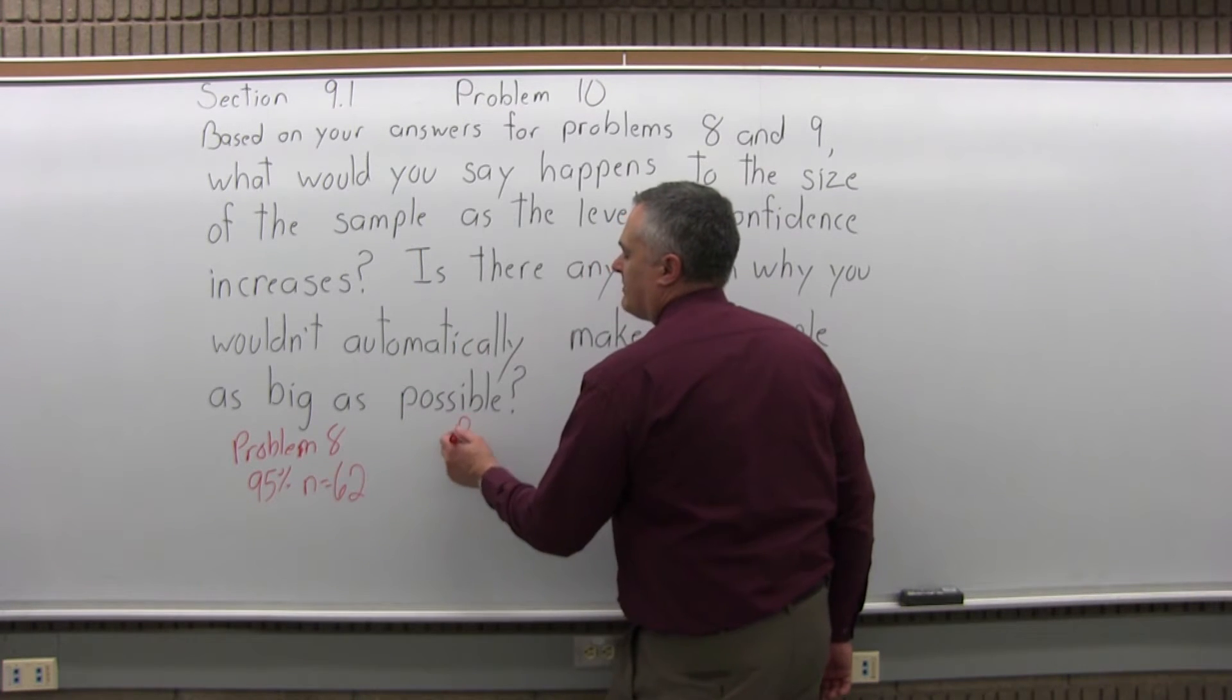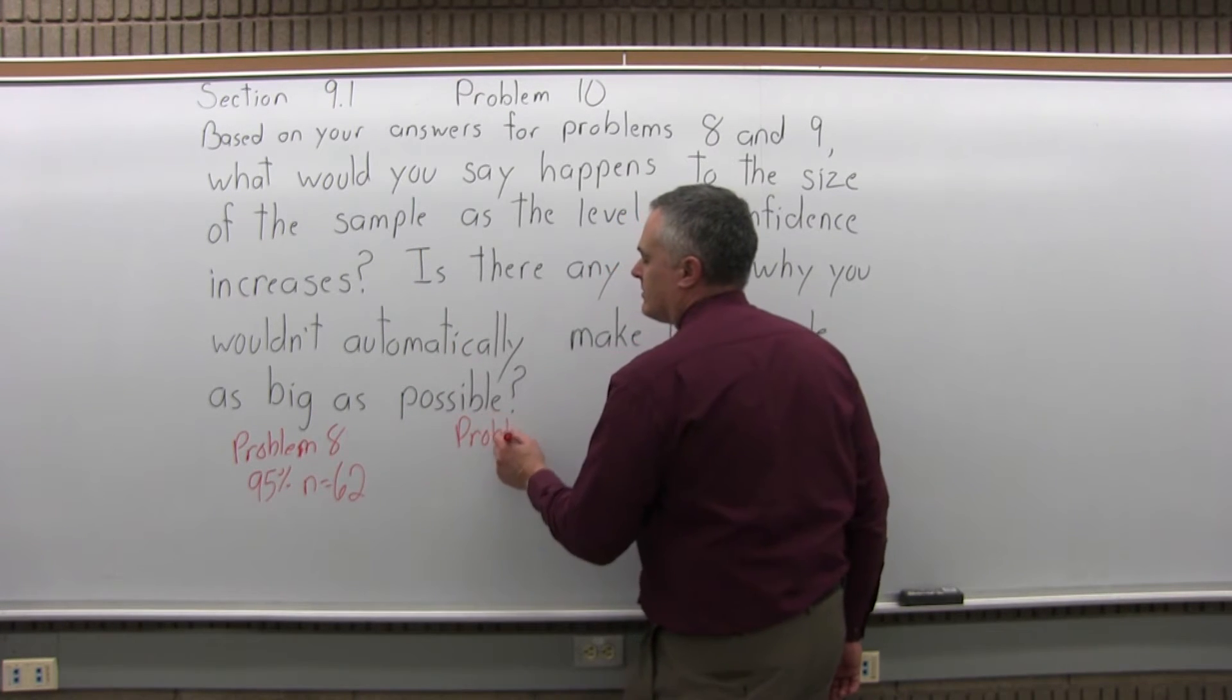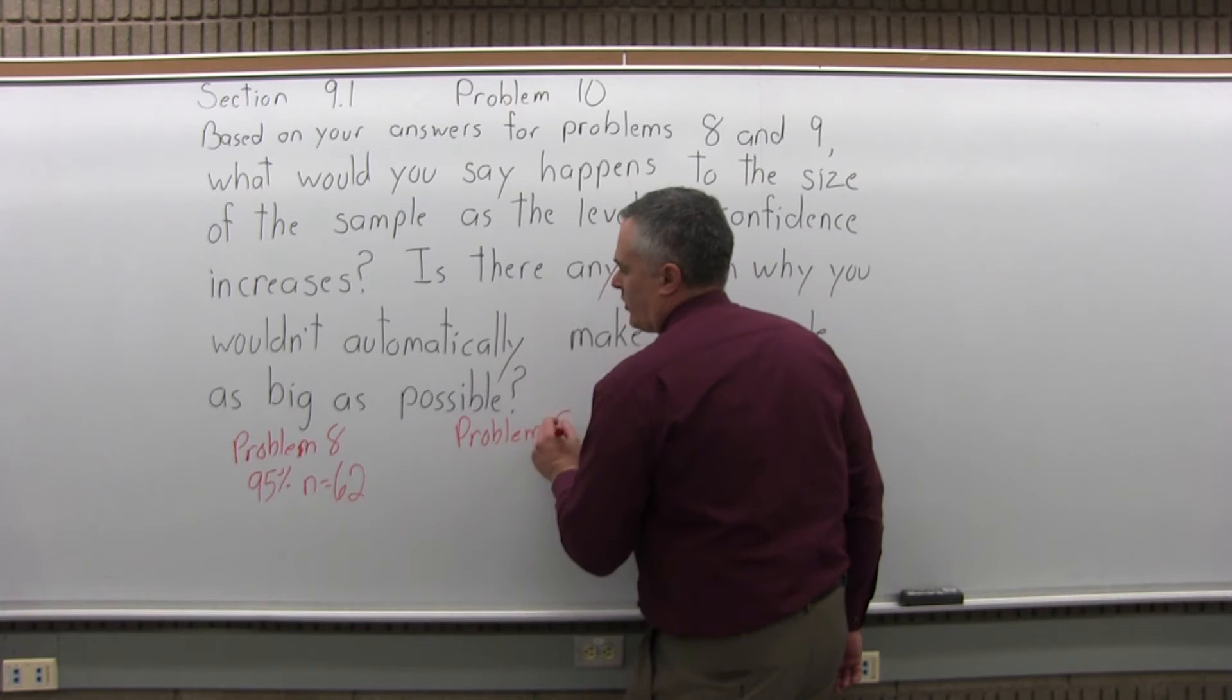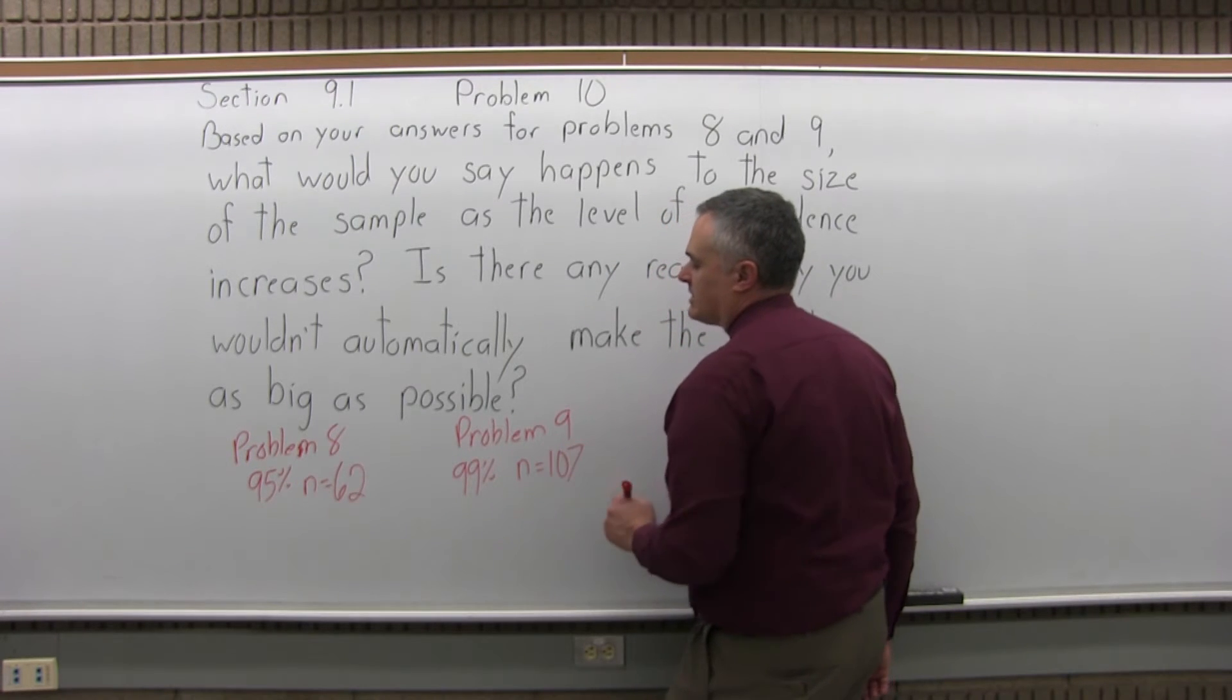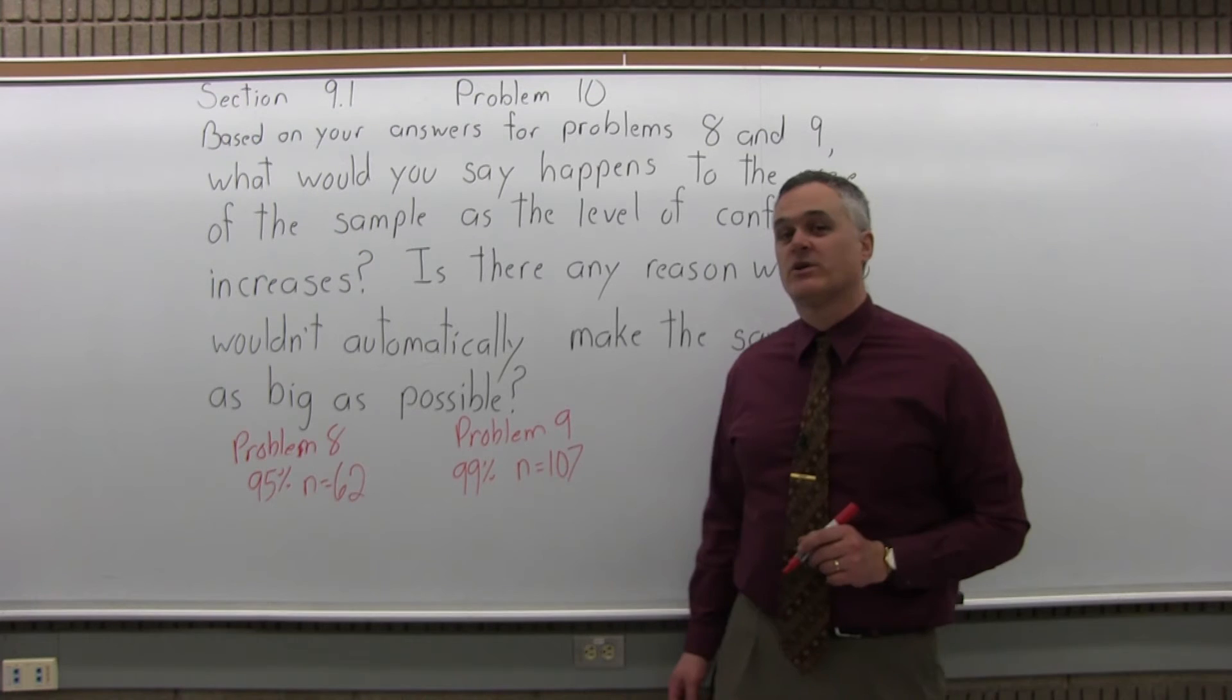And for Problem 9, if we wanted 99% confidence, we wanted a little more confidence, the size of the sample that we would need to get that 99% confidence went from 62 up to 107.